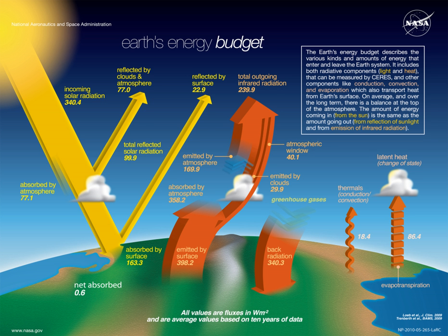Earth is very close to being in radiative equilibrium, the situation where the incoming solar energy is balanced by an equal flow of heat to space. Under that condition, global temperatures will be relatively stable. Globally, over the course of the year, the Earth system—land surfaces, oceans, and atmosphere—absorbs and then radiates back to space an average of about 240 watts of solar power per square meter.